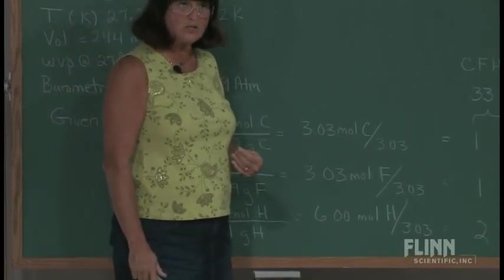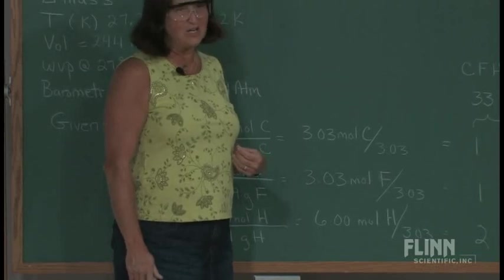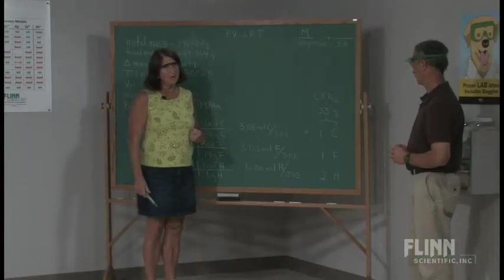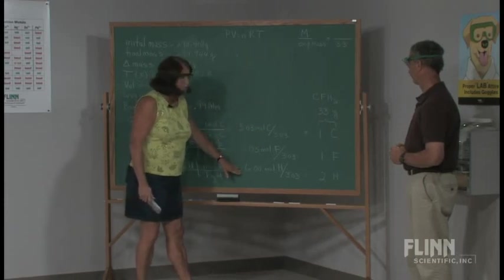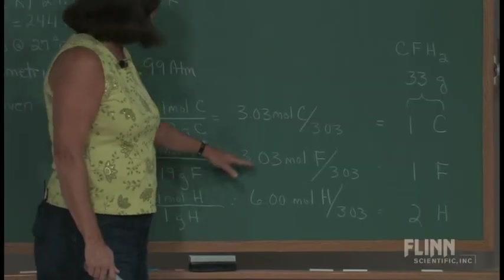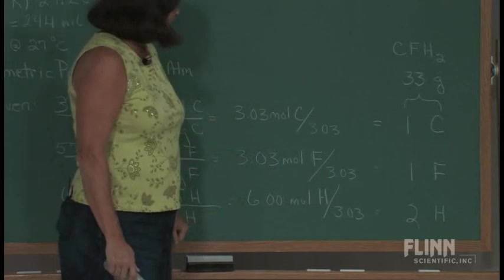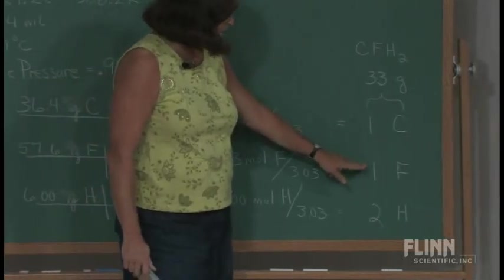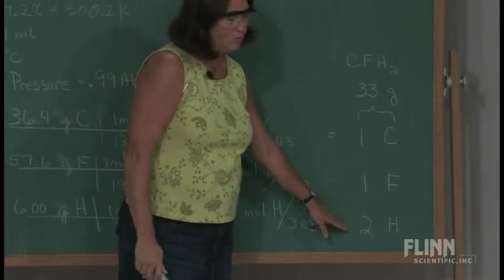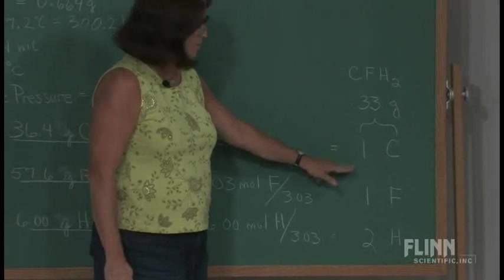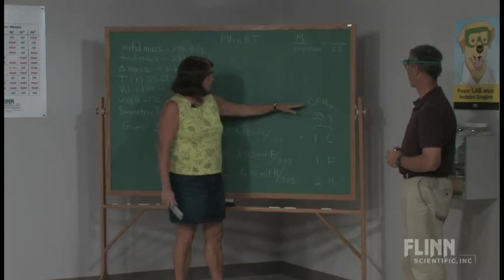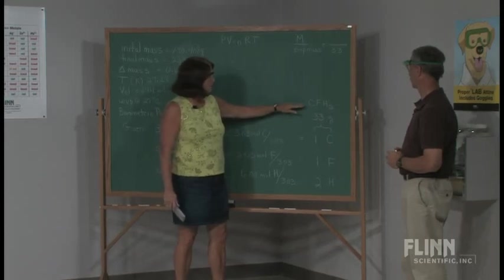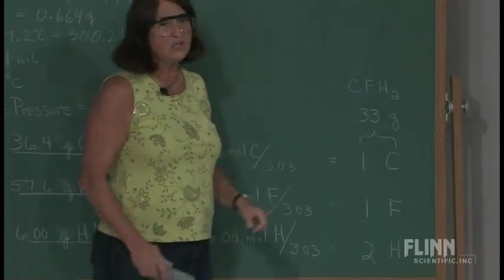To find the empirical formula, I would divide all of these moles by the smallest number in order to get the smallest whole number ratio. That's what an empirical formula is going to tell me. Dividing by 3.03, I'm going to get a ratio of 1 to 1 to 2. 1 carbon, 1 fluorine, 2 hydrogens. My empirical formula, then, would be CFH2.